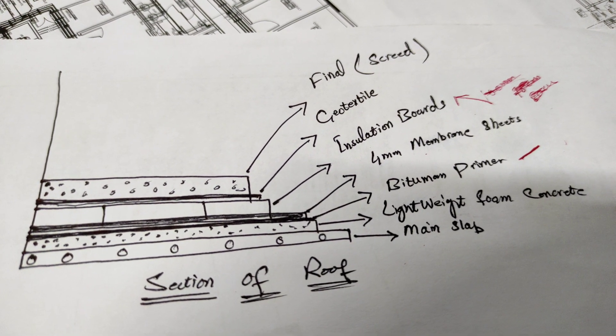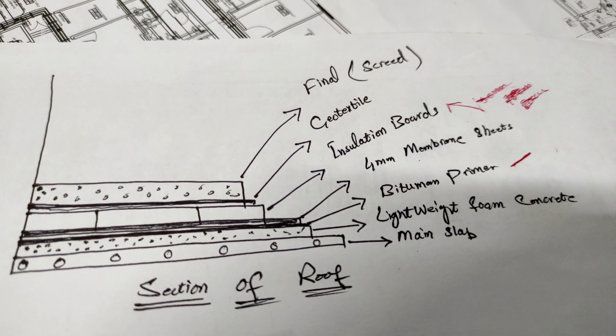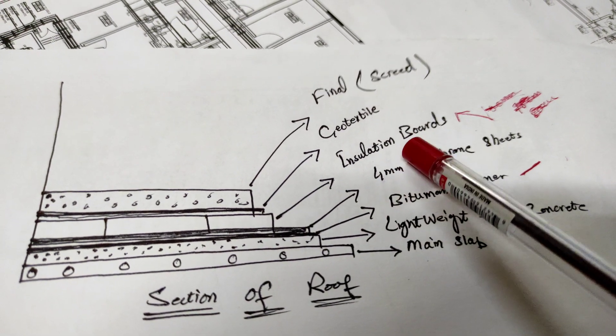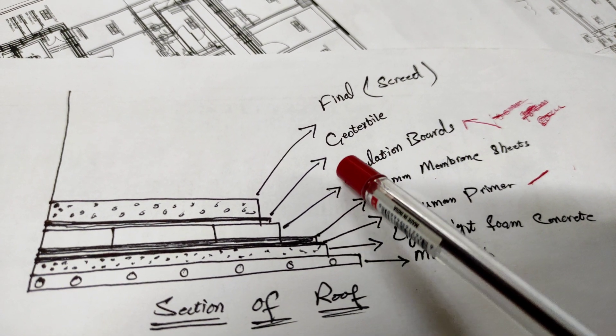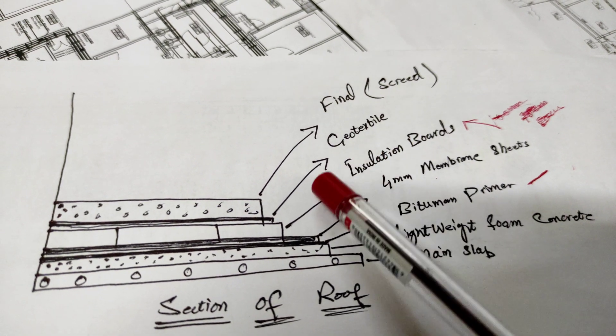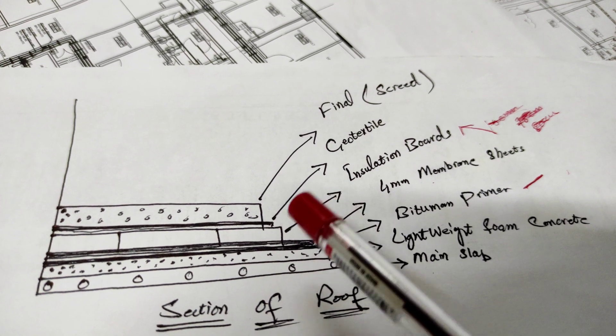In the market, there are two types of membrane available: one is plain and second is granular. After this, we will install insulation board, and after insulation board we will lay one layer of geotextile. There are different types of GSM in the market.